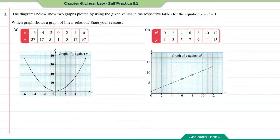Practice 6.1, question number 1. The diagram below shows two graphs plotted by using the given values in the respective tables for the equations y equal to x squared plus 1. Which graph shows a graph of linear relations? State your reasons.